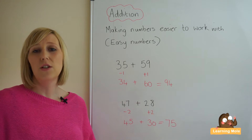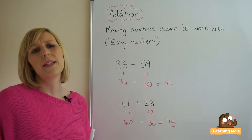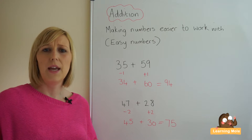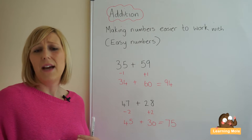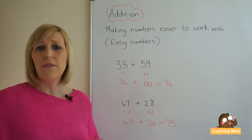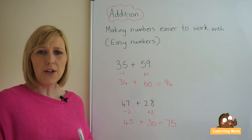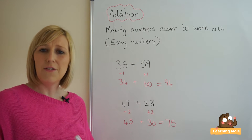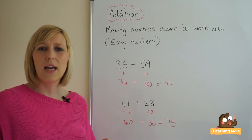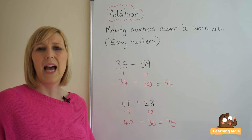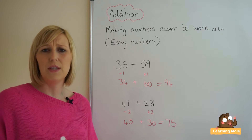In this lesson we're going to visit another addition strategy: making numbers easier to work with, or 'easy numbers'. It really means adjusting numbers so that they are easier to work with and easier to calculate mentally. I'm giving you a huge variety of strategies so that children have a wealth of strategies to choose from. They will probably develop a natural preference for one strategy, but these different strategies can be used in different situations, giving your child a range of alternatives they can use and feel secure with.